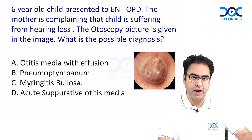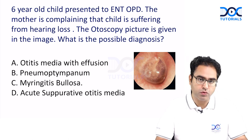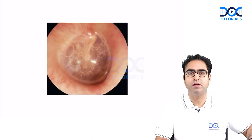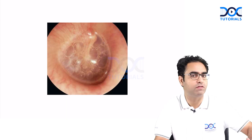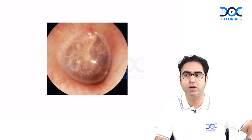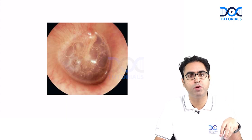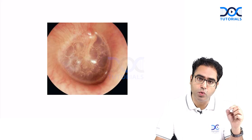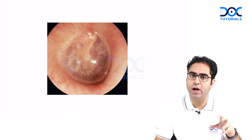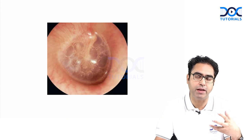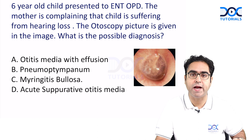The first question was about a six-year-old child who presents to ENT OPD with the mother complaining of hearing loss. An otoscopy picture is given in the image — a classical picture of glue ear. Glue ear is more common in school-age children, and the age supports the diagnosis. The commonest cause of glue ear is adenoid hypertrophy, also a disease of school-age children. Changes in the tympanic membrane in glue ear are visible — mild retraction with glue behind the tympanic membrane in the middle ear. Glue is sterile and can have air bubbles trapped, visible clearly behind the tympanic membrane. The classical diagnosis is glue ear, also called serous otitis media or secretory otitis media or otitis media with effusion.